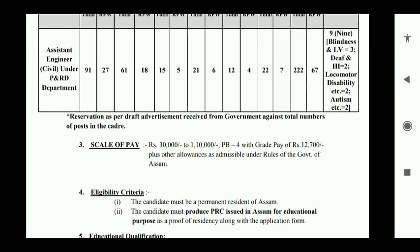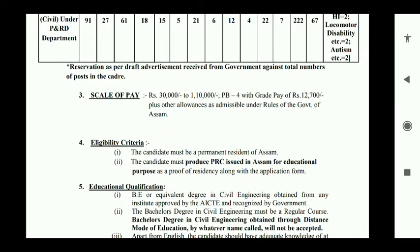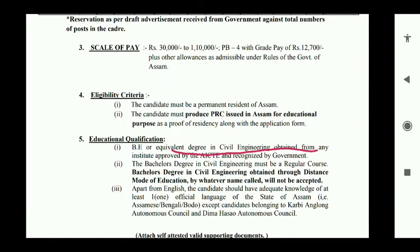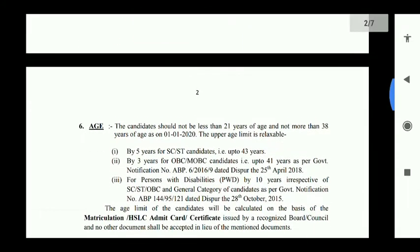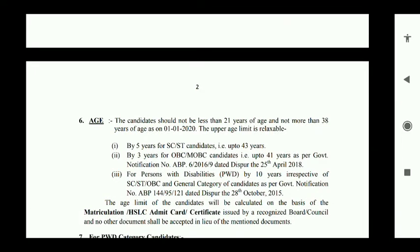The scale pay is 3,000 and the grade pay is 12. Eligibility is required; the candidate must be a permanent resident of Assam. PRC is required. The educational qualification must be from a regular course — a bachelor's degree in civil engineering. The local language includes Bengali as well as the local language. Age limits are given and the category is given as reduction.